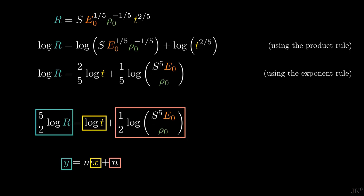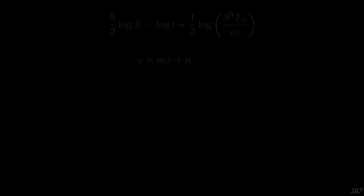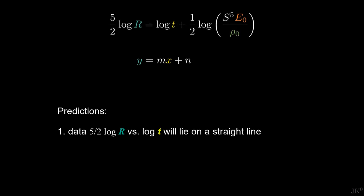From this result, we can conclude that Taylor's formula makes the following two predictions. Number one, if instead of the plot R versus t, we make the plot 5 divided by 2 log of R versus log of t, the data will lie on a straight line. And number two, since the x-axis, which is log t, in our equation has a factor 1 in front, this straight line will have a slope equal to 1, meaning that it will form a 45 degree angle with the axis.